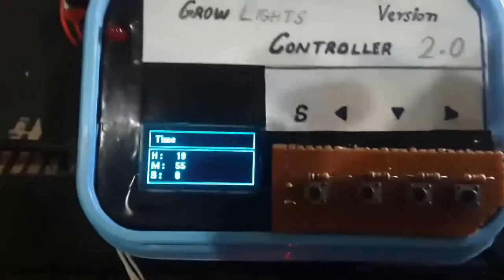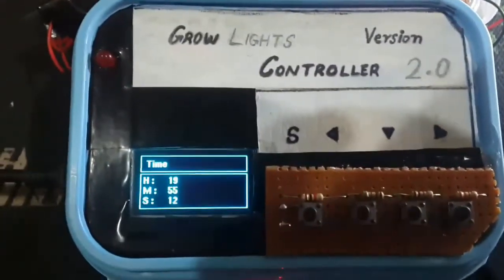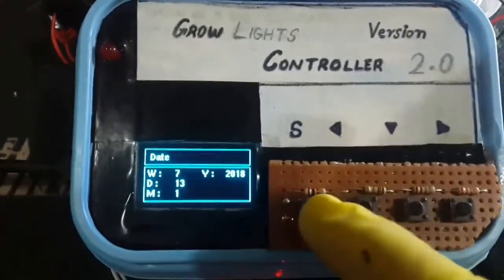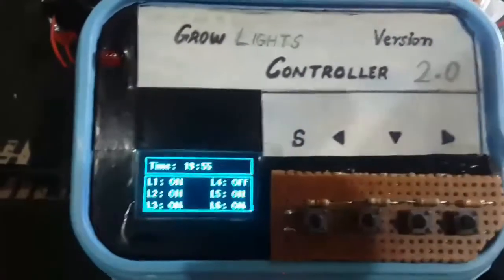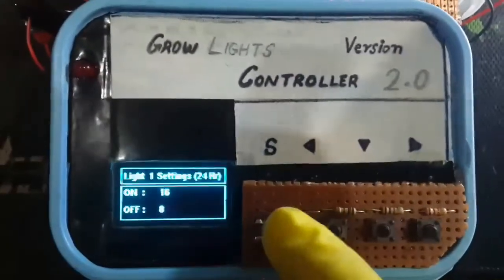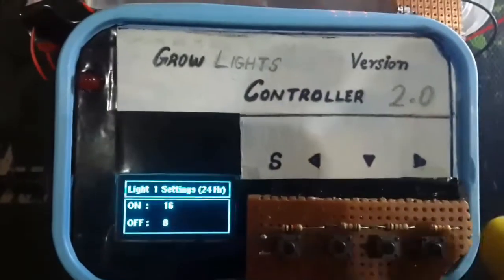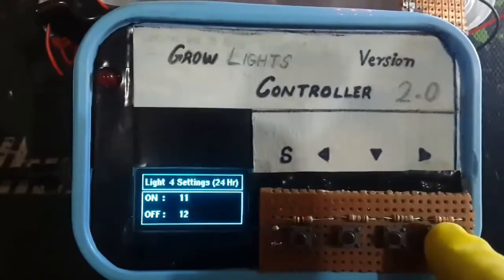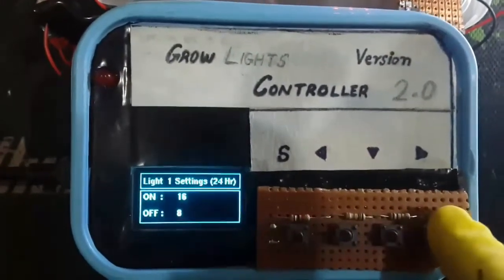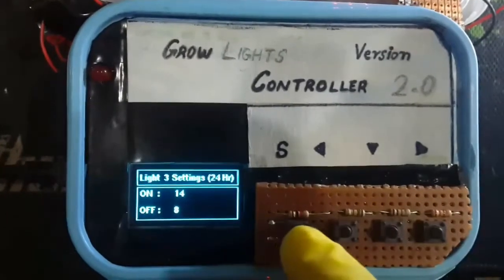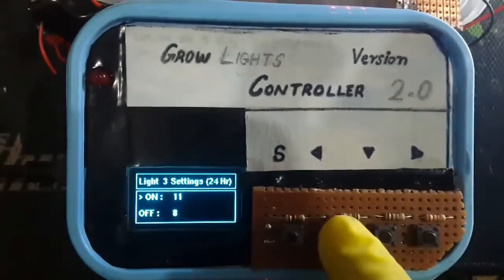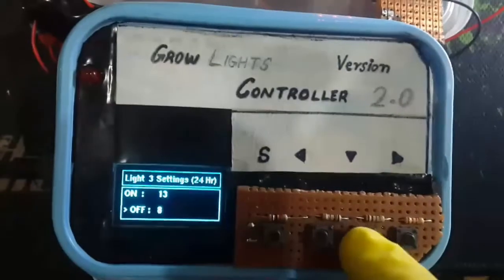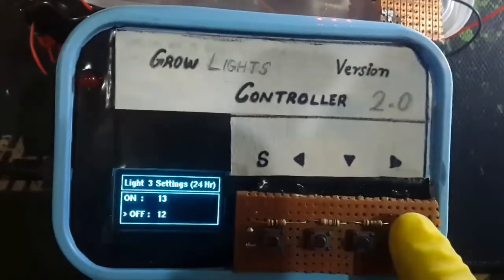Down below shows the time and date, and by pressing select you can change the time and date in the RTC. The main menu is different as it only has to control lights. You can select different settings for different lights. This is the on time, this is the off time.